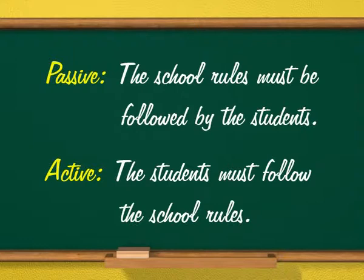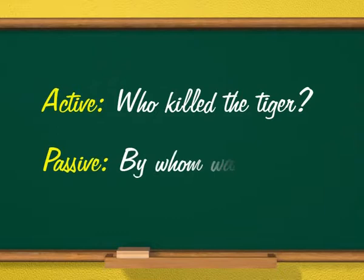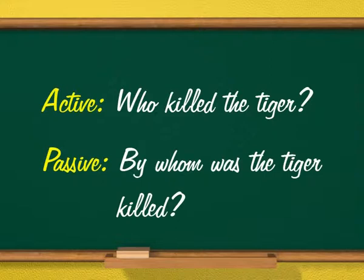Passive: The school rules must be followed by the students. Active: The students must follow the school rules. Active: Who killed the tiger? Passive: By whom was the tiger killed?